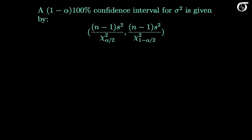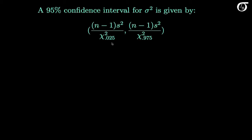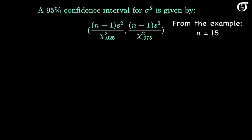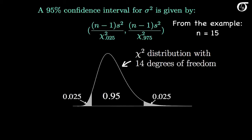Here's the formula for a confidence interval for the population variance when we are sampling from a normally distributed population. We want a 95% confidence interval, so alpha is 0.05 and alpha over 2 is 0.025. We get a chi-squared 0.025 value and a chi-squared 0.975 value from the chi-square distribution. We had a sample size of 15, so we have 14 degrees of freedom, and I'm plotting a chi-square distribution with 14 degrees of freedom. We put 95% of the area into the middle and split the remaining 5% evenly into the two tails — 0.025 in the right tail and 0.025 in the left tail. Chi-square 0.025 is the chi-square value that has an area to the right of 0.025, right here in the right tail.